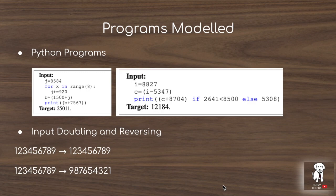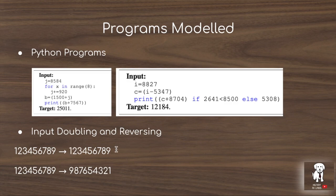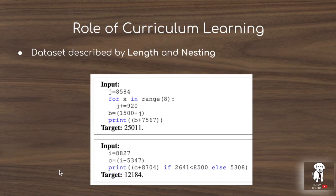The programs modeled in 'Learning to Execute' focus on Python programs that include for loops, comparisons, and operations like addition, subtraction, multiplication, and division. They also test input doubling and reversing as baselines: doubling requires memorizing the input and reproducing it, which demands significant LSTM memory in the hidden cell state; reversing requires taking in a sequence and producing it in reverse order. These are two additional interesting problems tested alongside the Python program modeling.